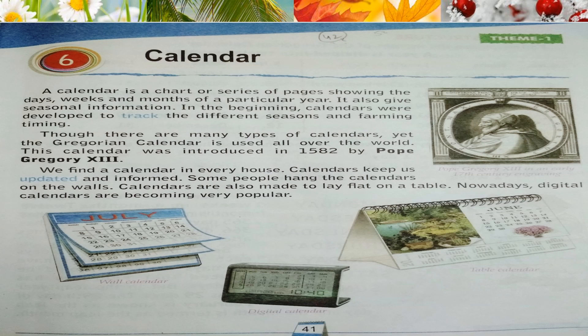We find the calendar in every house. Calendars keep us updated and informed. Some people hang the calendars on the walls. Calendars are also made to lie flat on a table. Nowadays, digital calendars are becoming very popular. All of you are having calendars on the wall in your houses, and some also have calendars that you can keep on a table. And as you can see on your parents' mobile phones, they all have digital calendars.